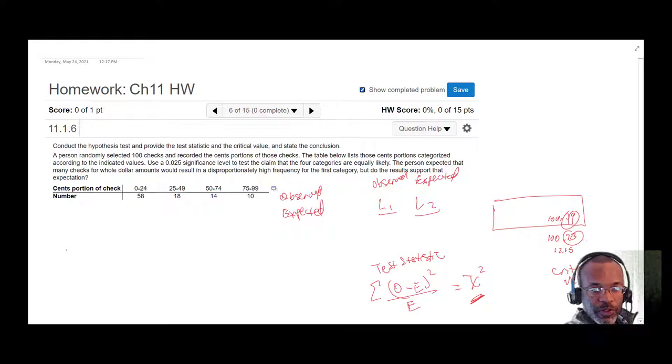So the critical value that we're going to compare our test statistic to—once again I'll draw my kind of rubric, my setup here—and then I have my critical value, my chi-squared critical value, and it's going to correspond to the 0.025. Then I'm going to go ahead and take my test statistic.